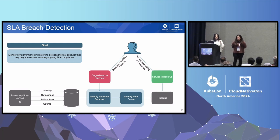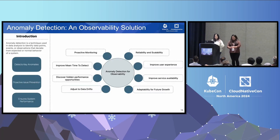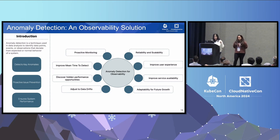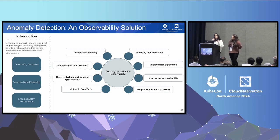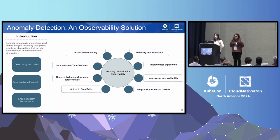What we're trying to solve here is SLA breach detection. You want to track your KPIs. Whenever there is abnormal behavior in these KPIs that leads to service degradation or SLA breaches, you want to identify that, figure out the root cause, fix the issue, and bring the service back up. The answer is anomaly detection — a technique used to identify data points, events, or observations that deviate from expected or normal behavior of a system.